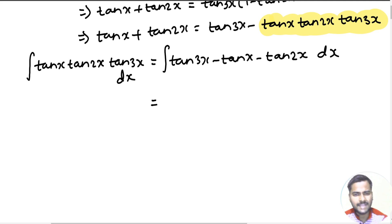So you can write this as log sec 3x divided by the coefficient of x, so divide by 3. Again log sec x being divided by 1, so that doesn't matter.